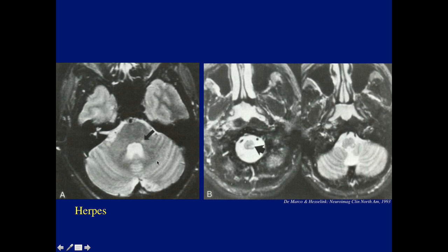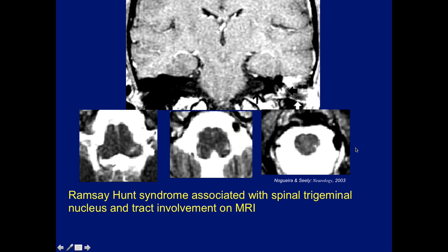Here's another case from the literature — a patient with herpes showing involvement of the trigeminal tract going down to the medulla. Also, in Ramsey-Hunt syndrome you may have involvement of the trigeminal nucleus and tract seen on MR. Ramsey-Hunt syndrome is caused by the varicella virus — the same virus that causes chickenpox and shingles.